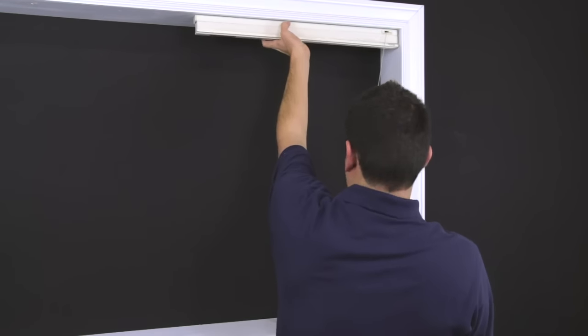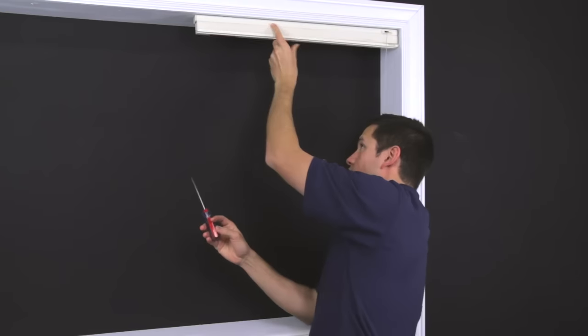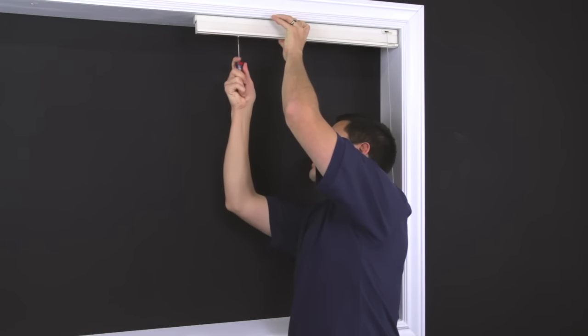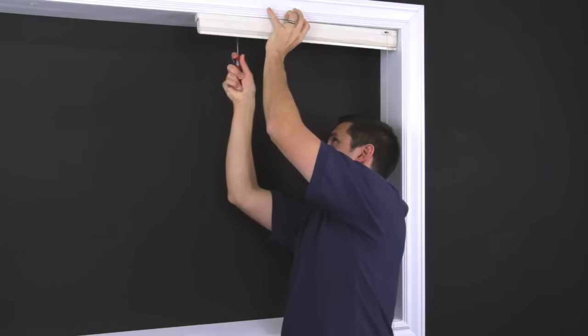Most Graber and Bally cellular shades are removed by placing a flathead screwdriver between the clip at the rear of the bracket and the back of the headrail and twisting.